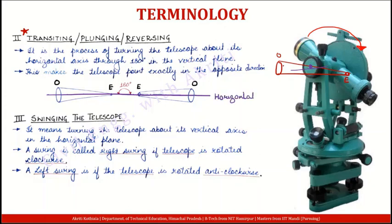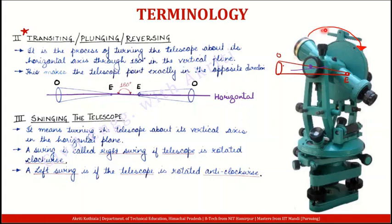Toh aap ne yahan pe imagine karayein to is screw ke through, under towards the plane of the screen, yeh straight line ja rahi hai joh aapka horizontal axis form kar raha hai. Or uske about aapka yeh telescope rotate kar raha hai. Toh agar aapke theodolite mein aisi facility hai, aisi ability hai ki woh rotate kar sakta hai about its horizontal axis in the vertical plane — usse kya bola jata hai — Transit theodolite.